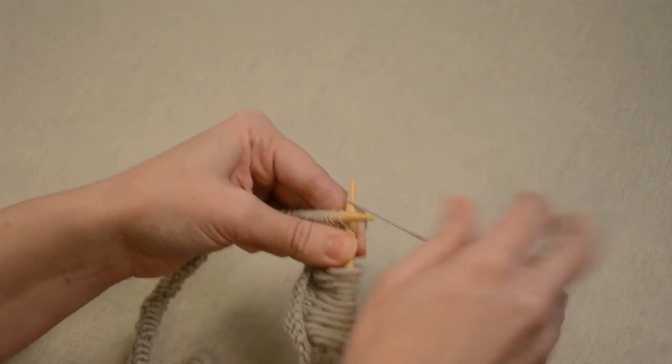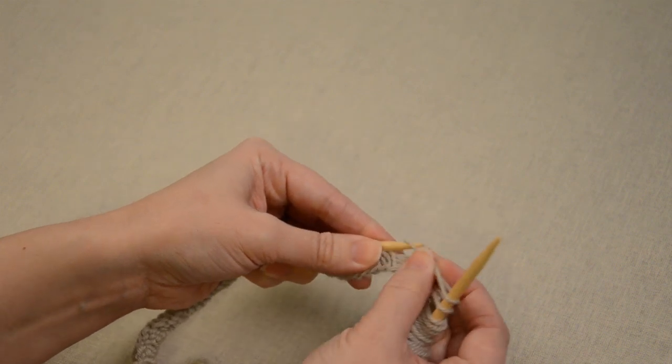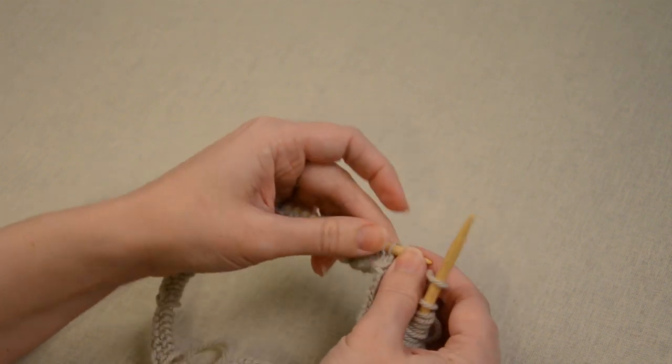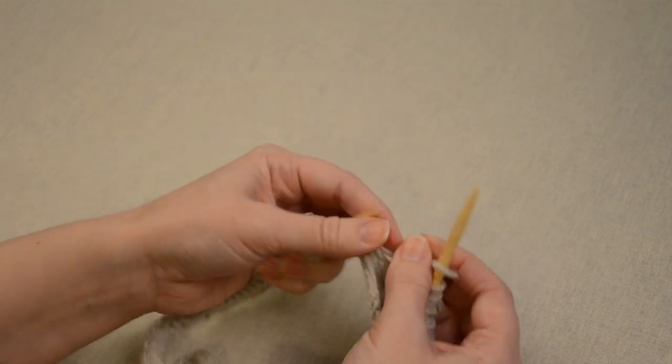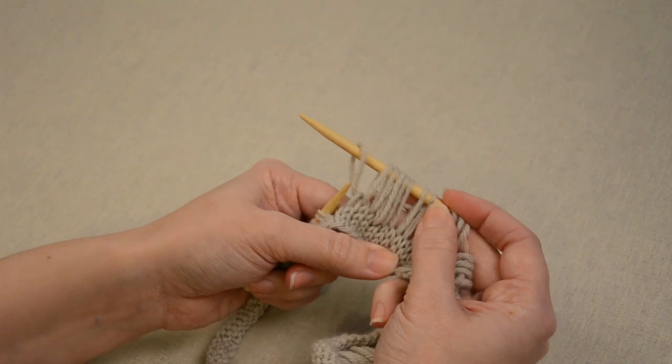So once you get the hang of this it'll go fairly quickly, but essentially we're just going to go around the entire round until we've created 190 of these elongated stitches.